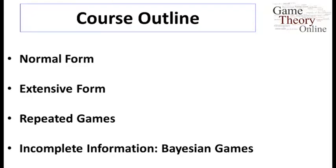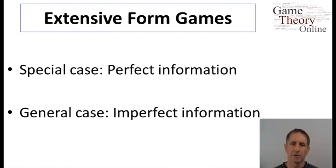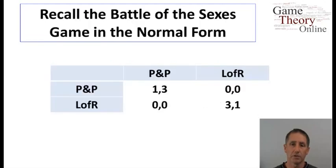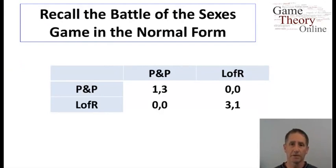We've seen one form of games: the normal form. Let's now move to the second very common form, the extensive form. The extensive form comes in two flavors: a special case called games of perfect information, and the more general case, games of imperfect information. We'll start with a simple form of games of perfect information, and perhaps the best way to start is through an example, starting with our familiar Battle of the Sexes games.